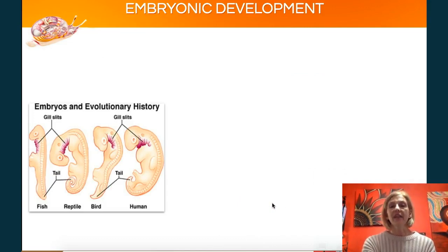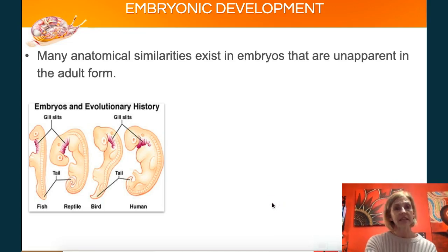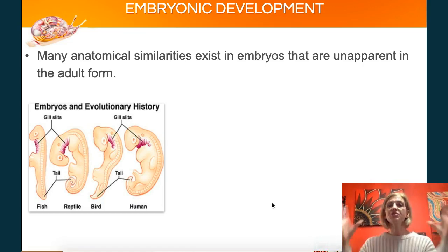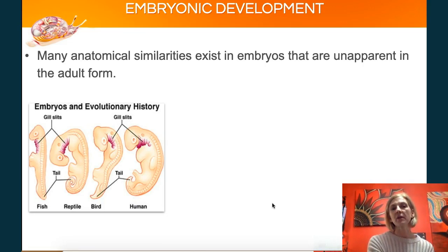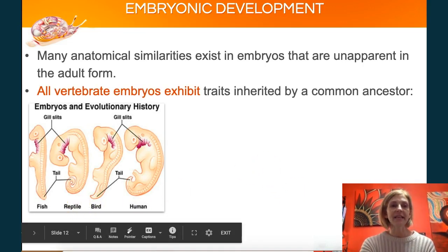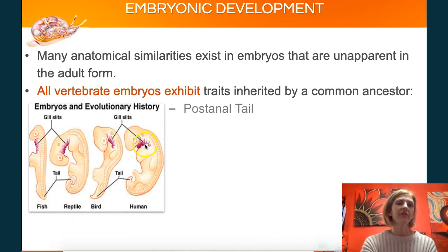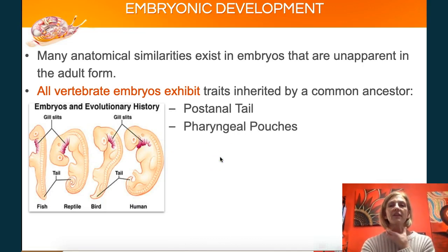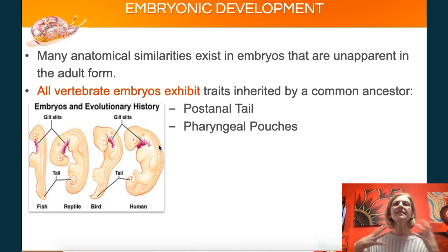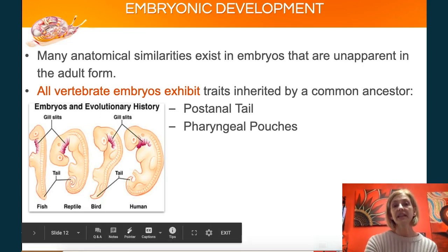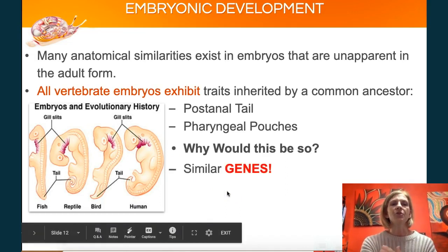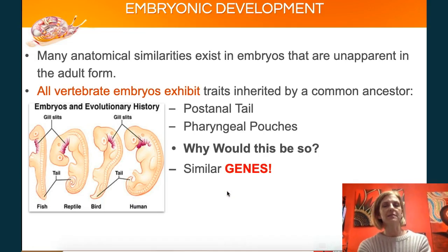Embryonic development goes right along with that — similar structures mean similar DNA. Many of our structures exist in the embryonic form that don't exist in the adult form. In the embryonic stage, all vertebrates look very similar, and the earlier in development, the more similar they look. All vertebrates have a post-anal tail and pharyngeal slits. In humans, these pharyngeal pouches became things related to our throat, jaw, tonsils, and thyroid; in fish they became gills. So in order for us to have similar features, DNA must code for similar traits, meaning we must have similar DNA.